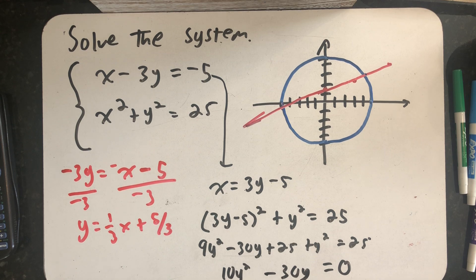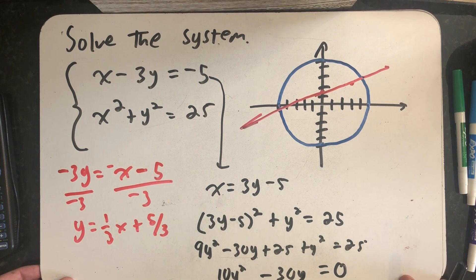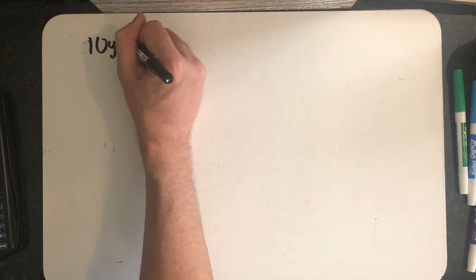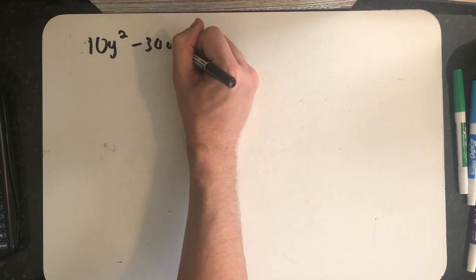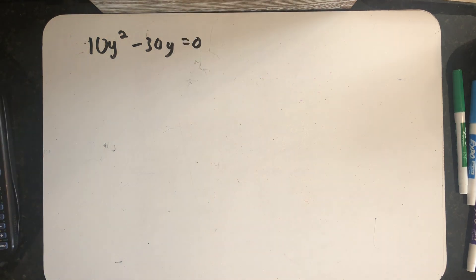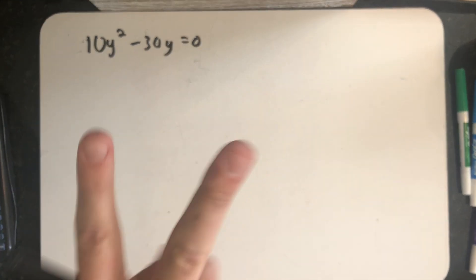And so now all I have to do is do a little bit of factoring to find my values of y. And because I have a quadratic equation, I know I'm going to get two values. And that makes me very happy because I've seen in my diagram that I think there were going to be two solutions.